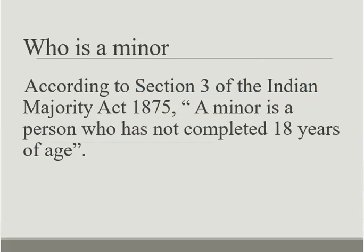According to Section 3 of the Indian Majority Act, a minor is a person who has not completed the age of 18 years. In case a guardian has been appointed by the court for a minor's person or property, the age of majority will be 21 years under the Majority Act 1875. However, according to the Indian Contract Act 1872, a minor is a person who is below the age of 18 years.